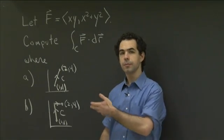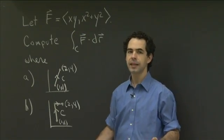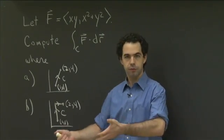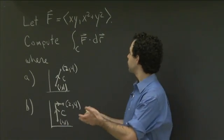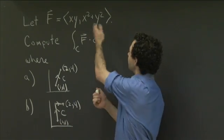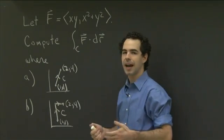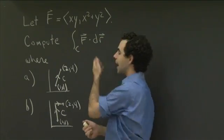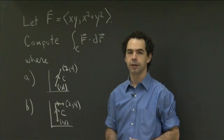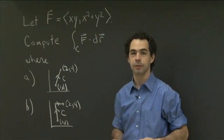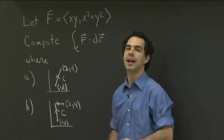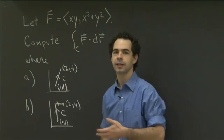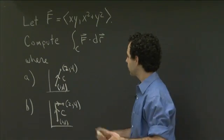When you're computing a line integral over a curve, the thing you want to do is parametrize the curve. That gives you expressions for x and y in terms of your parameter, and you just turn this integral into a nice single-variable integral and compute it. So that's our basic strategy for computing line integrals of vector fields. Let's start with part A.